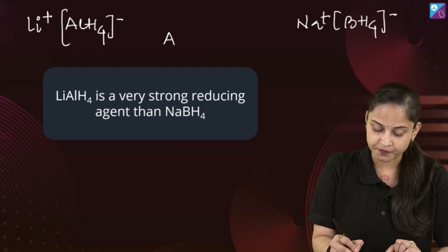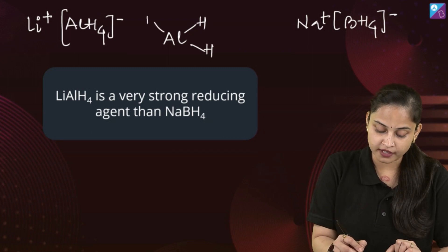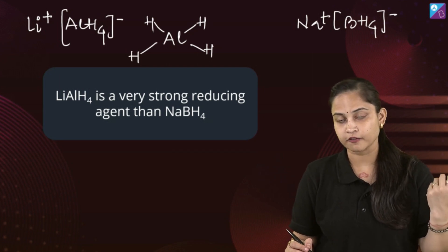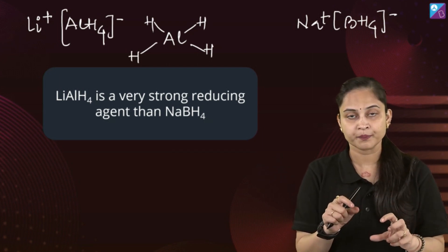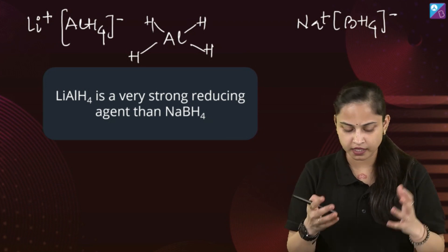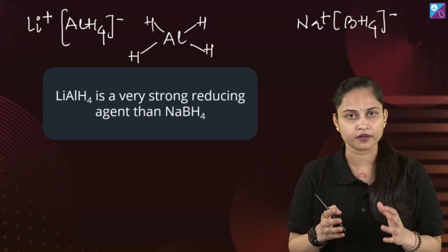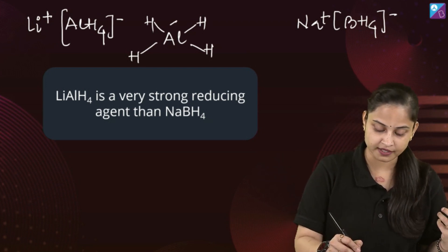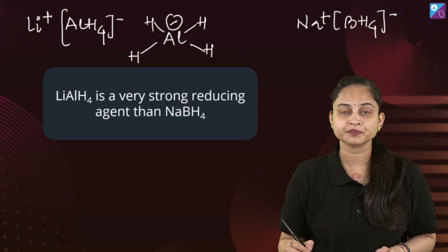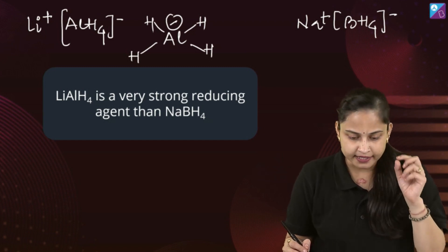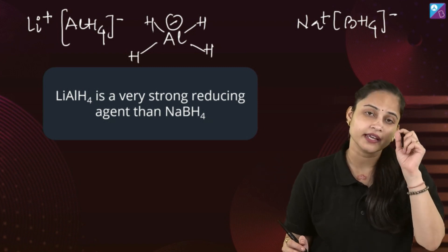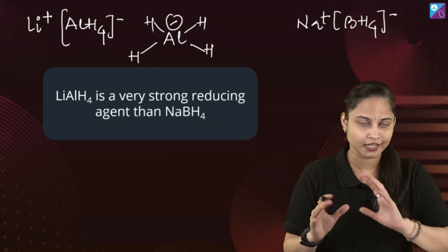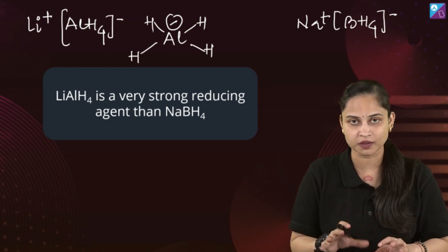Talking about AlH4⁻, aluminum has three valence electrons and it is forming bonds with hydrogen. In order to complete the octet, it requires one more electron. In doing so, it accepts an extra electron, and a negative charge gets developed on aluminum.